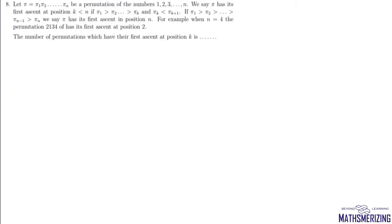Question number 8: Let pi = (pi_1, pi_2, ..., pi_n) be a permutation of numbers 1, 2, 3, up to n. We say pi has its first ascent at position k if pi_1 > pi_2 > pi_3 > ... > pi_k and pi_k < pi_{k+1}. For example, in the permutation (2, 1, 3, 4): 2 > 1 and 1 < 3, so the first ascent is at position 2. We need to find the number of permutations which have their first ascent at position k.